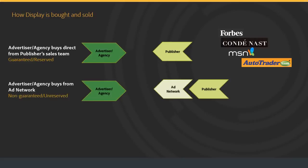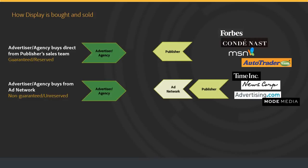The second common way display is bought and sold is an advertiser or agency buys from an ad network. An ad network consolidates or aggregates inventory from various publishers and packages it in different ways — by audience, by vertical, contextually, or by pricing model such as CPM, CPC, or CPA. The ad network sells the inventory to the agency or advertiser. It's indirectly sold and typically non-guaranteed. Examples of ad networks include the Microsoft Media Network, Yahoo Network, Time's network (which includes Sports Illustrated and Time Magazine), and Advertising.com, which is AOL's ad network.